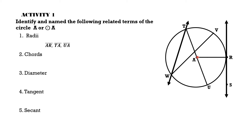Those are the radii of circle A. For number two, chord: the chords of circle A are line segment VW, line segment TW, and line segment TU. For number three, diameter: the diameter is a chord that passes through the center of the circle. The only chord that passes through the center is line TU, so the diameter is line TU.